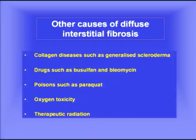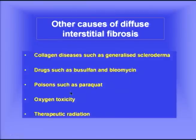Other causes of diffuse interstitial fibrosis include collagen diseases such as generalized scleroderma. Drugs can cause it — busulfan and bleomycin, a drug used in some types of cancer. Paraquat, an extensively used weed killer, causes a lethal form of interstitial fibrosis and is very dangerous. Oxygen toxicity can cause fibrosis, as can therapeutic radiation.